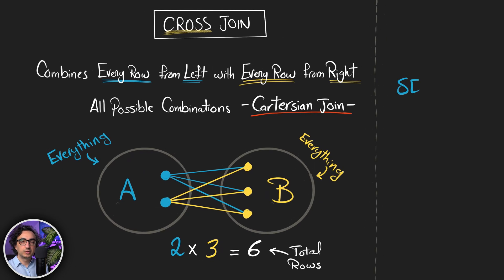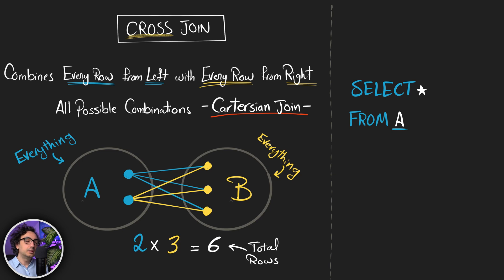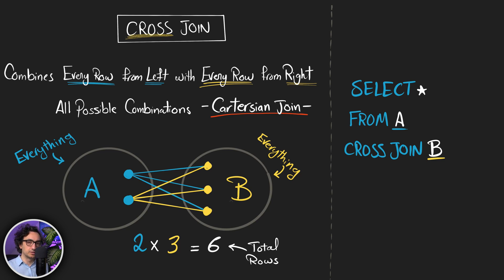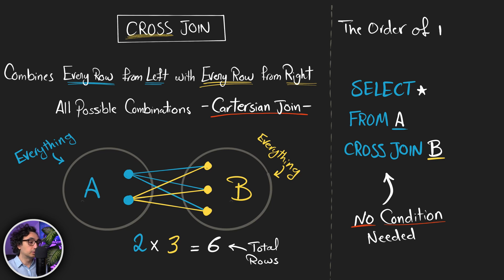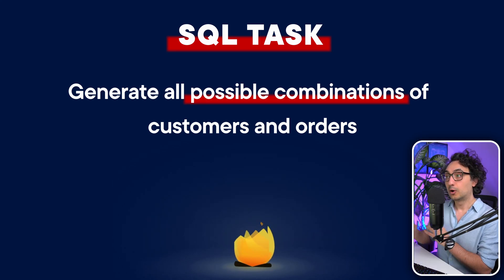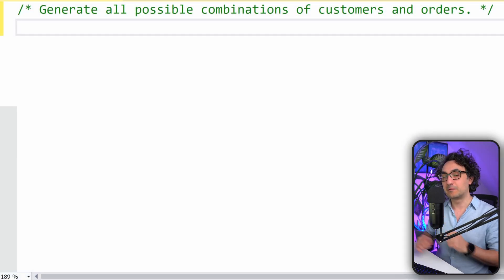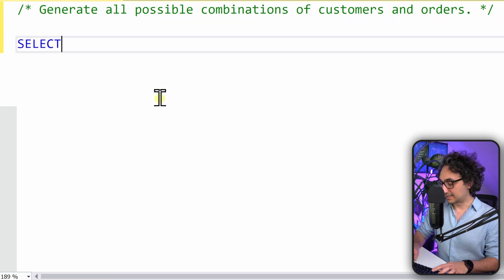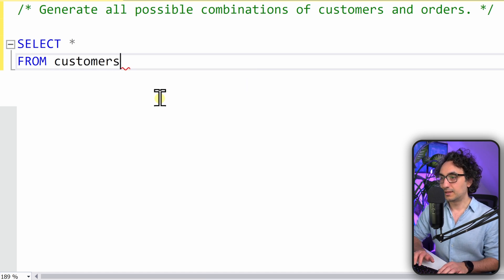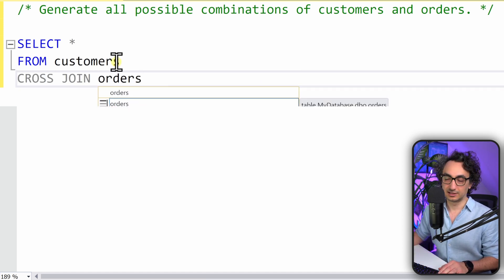The syntax is the easiest: from A cross join B. Unlike previous joins, we don't care about whether data is matching or not — we just want all possible combinations. Since we don't care about matching, we don't need to specify any condition, so there is no need for the ON keyword. You just say cross join B and the magic happens. The task: generate all possible combinations of customers and orders. Select star from customers, then cross join orders.